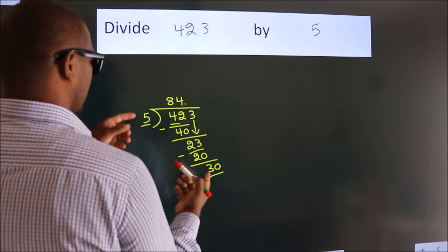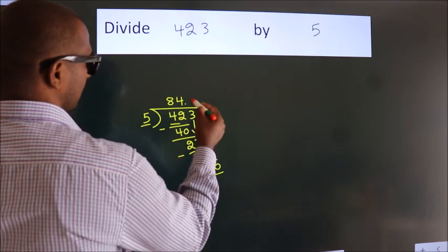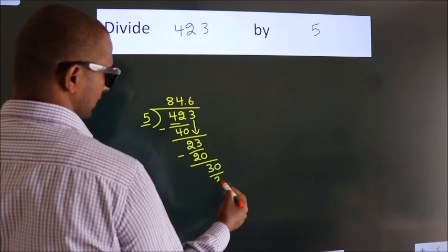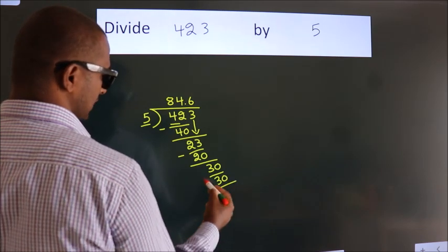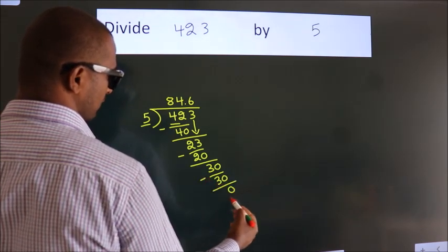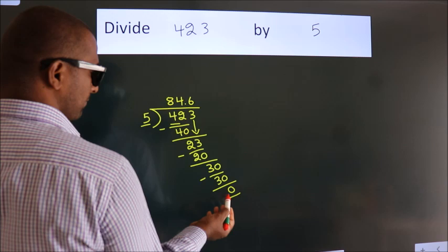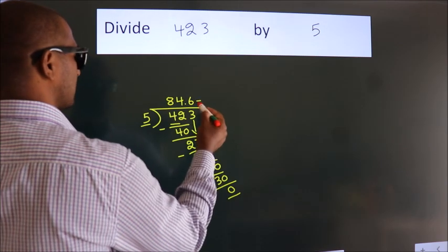When do we get 30 in 5 table? 5, 6, 30. Now we subtract. We get 0. We got remainder 0. So this is our quotient.